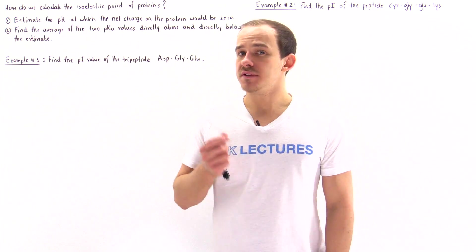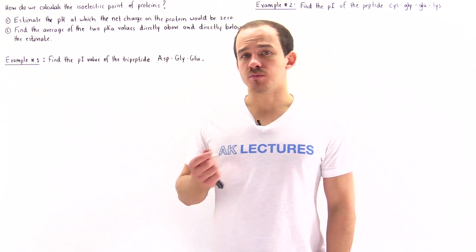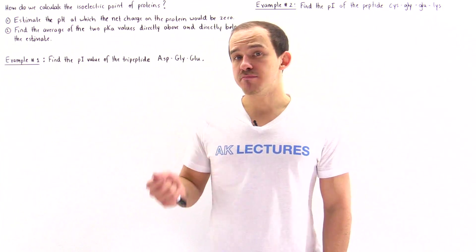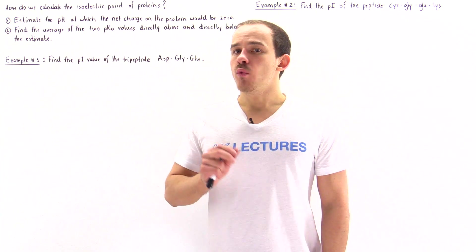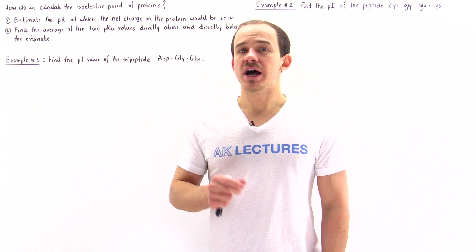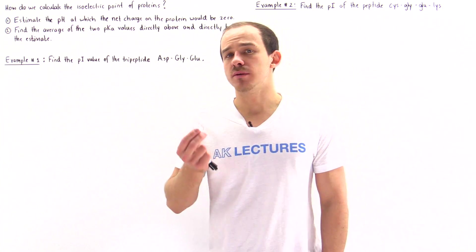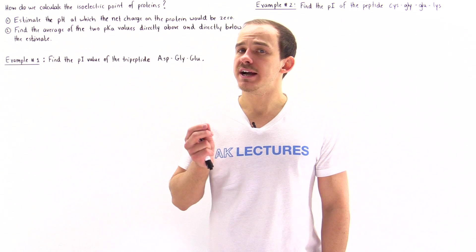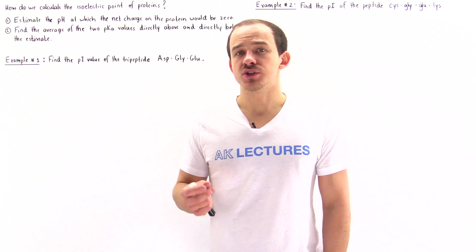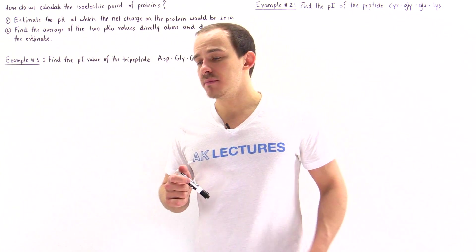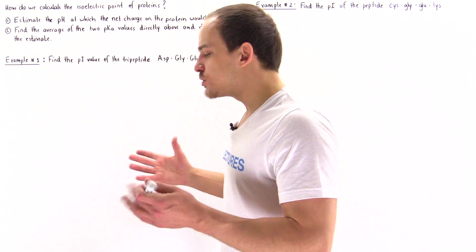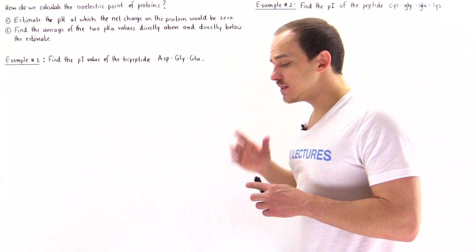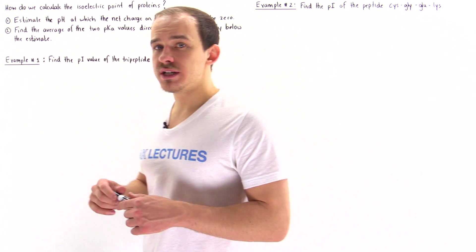The isoelectric point of an amino acid or protein is the pH value at which the net charge on that molecule is zero. We already know how to calculate the isoelectric point of individual amino acids, but how do you calculate the PI value of proteins that consist of two or more amino acids? This is what we want to focus on in this lecture.